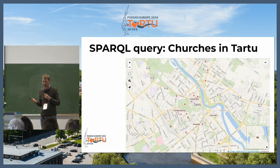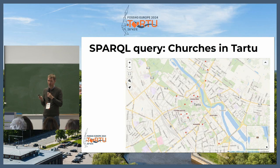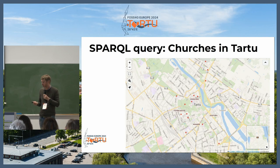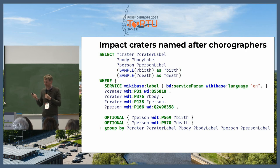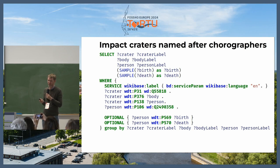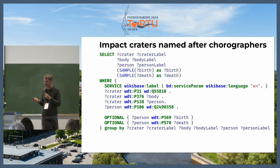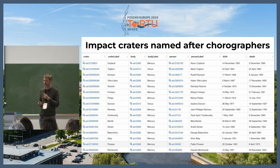We'd like to be able to link together OpenStreetMap and Wikidata — to look up things in OpenStreetMap and find them on Wikidata, and the reverse. Just as a bit of fun, here's a more complex SPARQL query: impact craters named after choreographers. Wikidata knows about all the impact craters in the universe and what they're named after, and here's a list of all the impact craters named after choreographers.